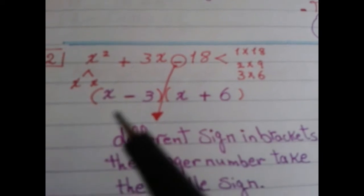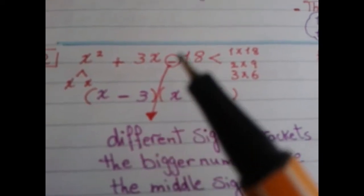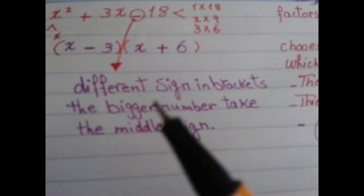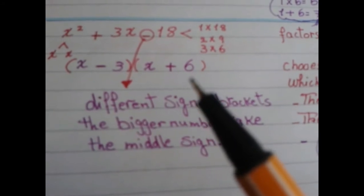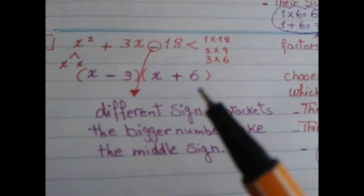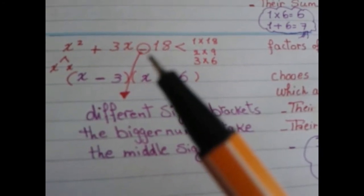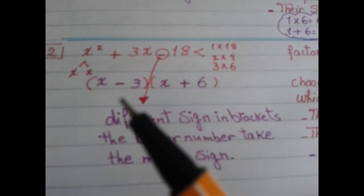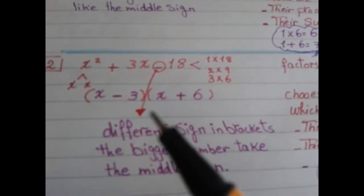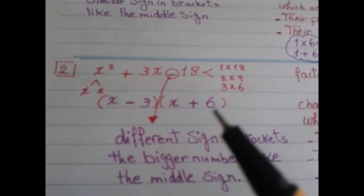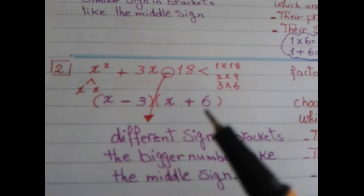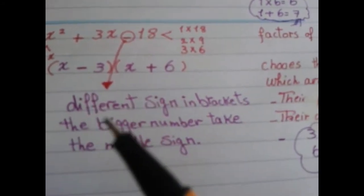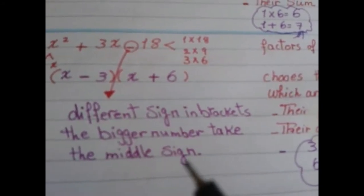Why negative for one and positive for the other? When the last sign is negative, the two brackets get different signs — one positive, one negative. The bigger number takes the sign of the middle term. Here, 6 is bigger and the middle term is positive, so 6 takes the positive sign and 3 takes the negative sign: (x + 6)(x - 3).